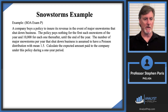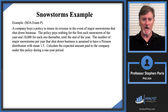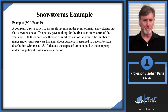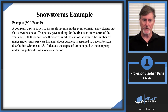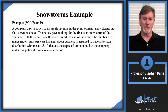In this example, a company buys a policy to ensure its revenue in the event of major snowstorms that shut down business. The policy pays nothing for the first snowstorm of the year and $10,000 for each one thereafter until the end of the year. The number of major snowstorms per year is assumed to follow a Poisson distribution with a mean of 1.5. Calculate the expected amount paid to the company under this policy during a one-year period.